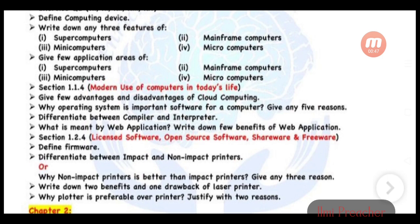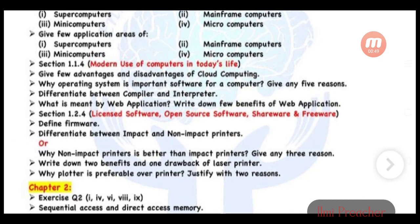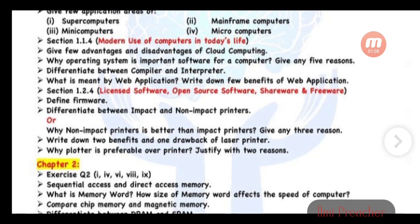Section 1.14: Modern use of computers in daily life. Give few advantages and disadvantages of cloud computing. Why operating system is important software for a computer - give any five reasons. Differentiate between compiler and interpreter. What is meant by web application? Write down three benefits of web application. Section 1.2.4: License software, open software, shareware, and freeware. Define firmware.